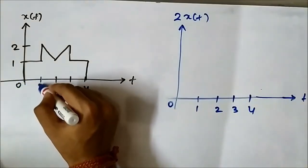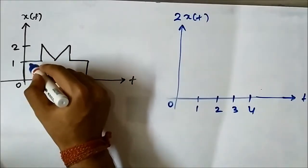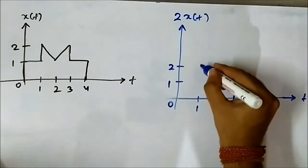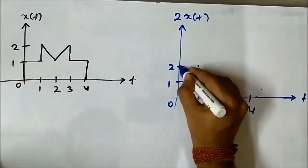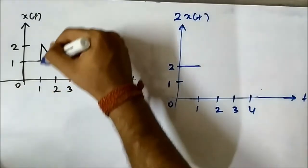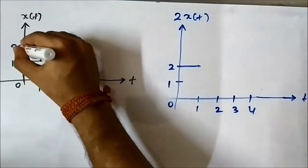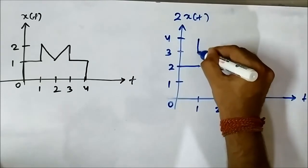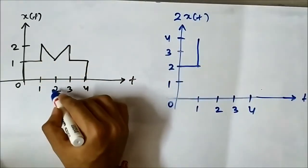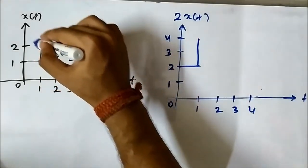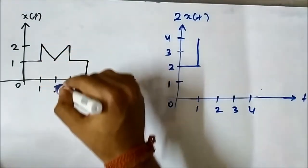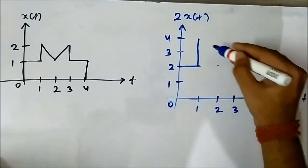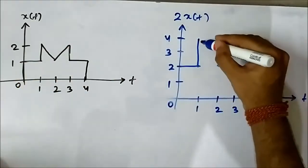At time t=1, the amplitude of the signal x(t) is 1. Since we are amplifying by a factor of 2, it will become 2. There is an upward rise from 1 to 2 in the reference signal, so here it will be from 2 to 4. Again, at t=2 there is a downward decrease with a certain slope, and at t=2 the amplitude is again 1, so it will drop down to 2.